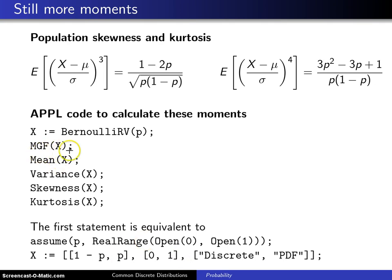After that, to get the moment generating function you just type in MGF(X). To get the population mean, which turned out to be p, you type in Mean(X). To get the variance of X, which is p(1-p), just type in Variance(X). To get the skewness you call the Skewness function, and finally to get the kurtosis you call the Kurtosis function.